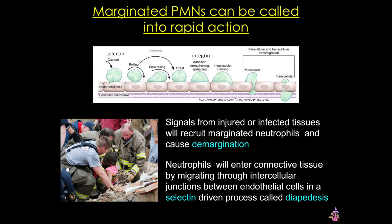Well, that's it for hematopoiesis. And though it seems daunting right now, by looking for the characteristics of each developmental stage and giving this a bit of practice, you'll soon be able to distinguish among the lineages and to identify the basic hematopoietic cell types. Thanks for stopping by.